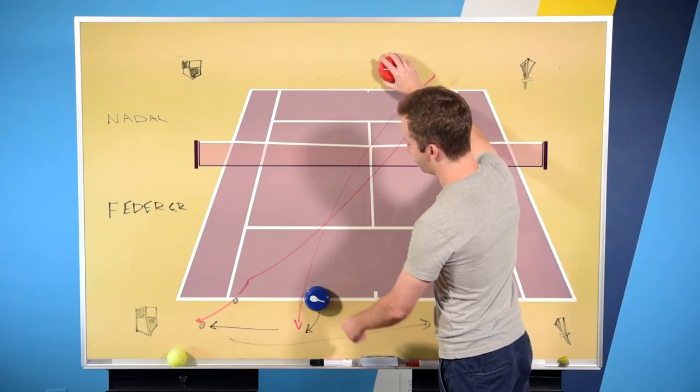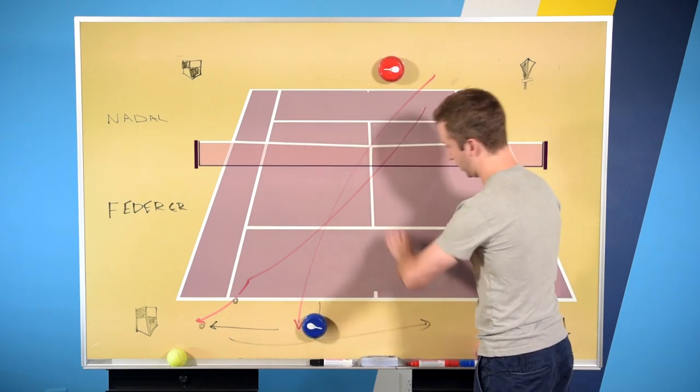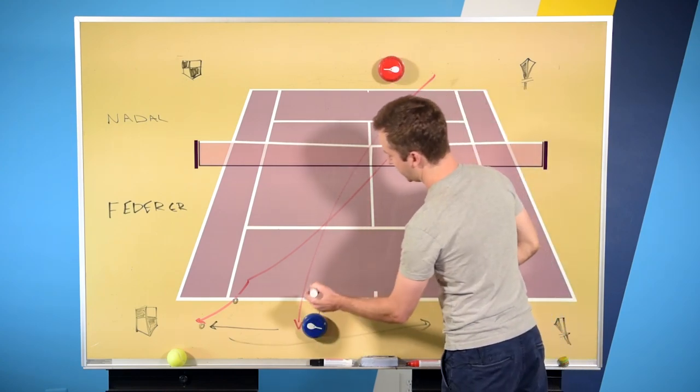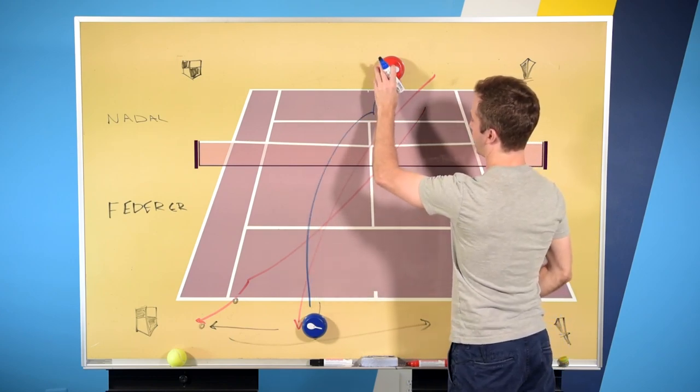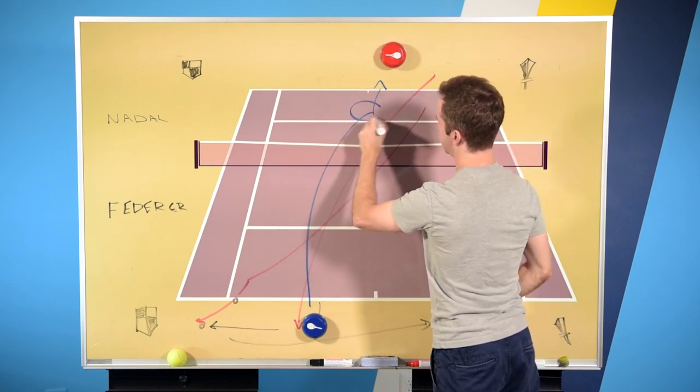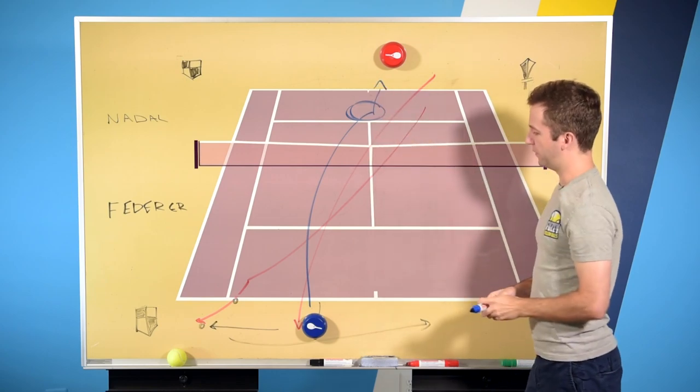So Fed a couple of years ago just gave up trying to hit slices. And what he does now instead off of this first shot here where Rafa tries to put him back, Fed will go hit an aggressive backhand, topspin backhand hard down the middle of the court.